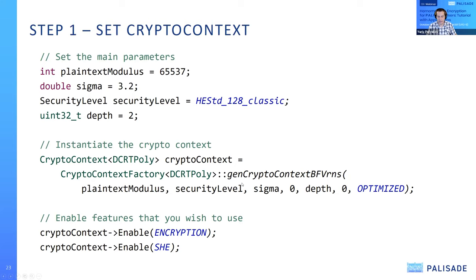When those parameters are set, we can instantiate the crypto context for a given scheme. The crypto context is a wrapper for all operations we're going to perform — eval-add, eval-mult, and so on. There is a special factory that generates the crypto context. An important detail: we also have DCRTPoly as the type of polynomial representation used for all RNS schemes. For schemes like BGV-RNS and BFV-RNS, we always use DCRTPoly, which gives the best efficiency.